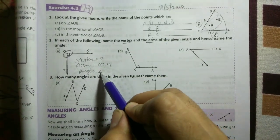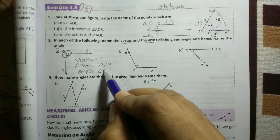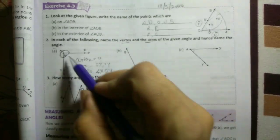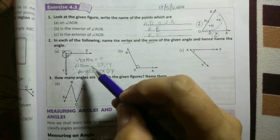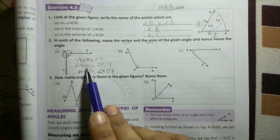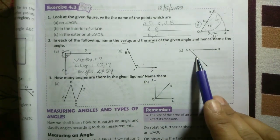This is the symbol of the angle. Then we write XOY. We write the vertex in the mid. So students, with the help of taking help of this term, you do part this and this.